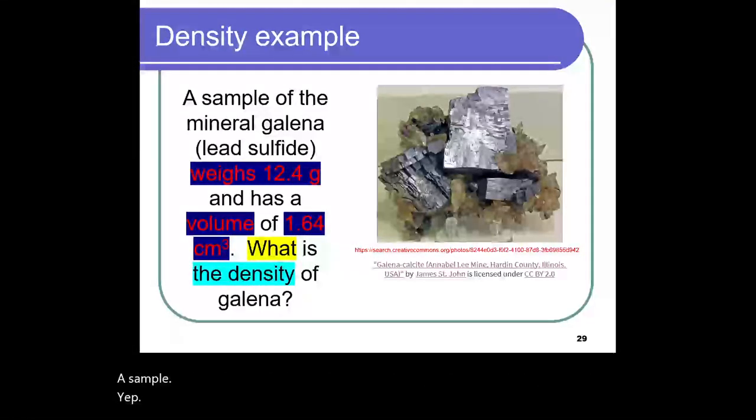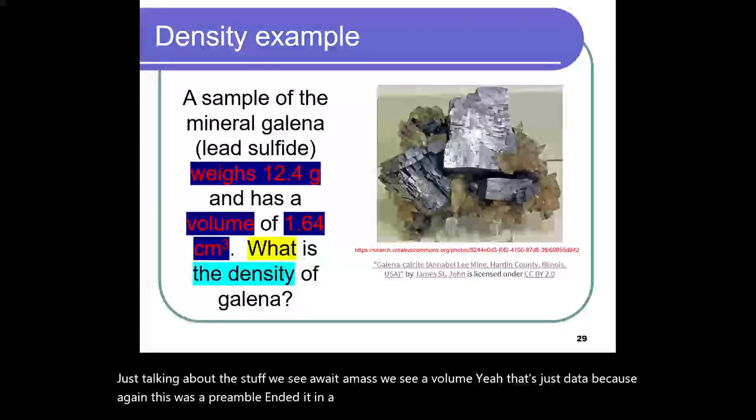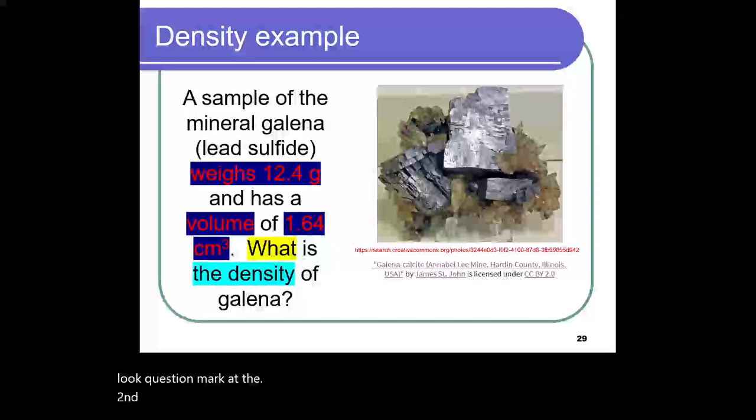We see a weight, a mass, we see a volume - that's just data. This was a preamble that ended in a period. And look, a question mark at the second one. 'What' - yep, that's a question word. 'The density of Galena' - we see we've got a mass, we've got a volume.